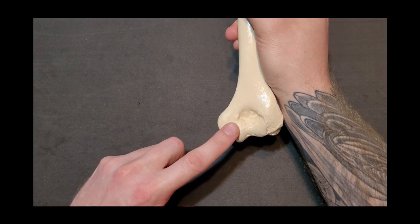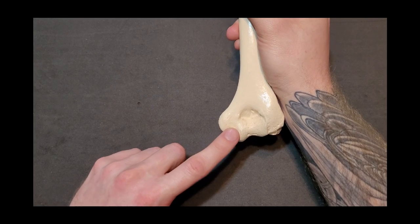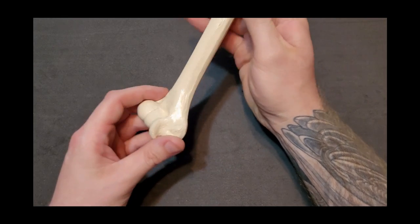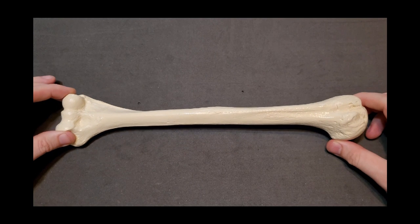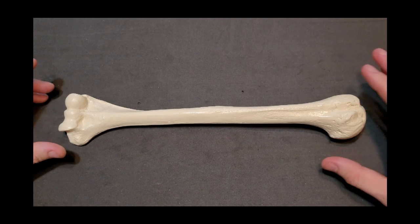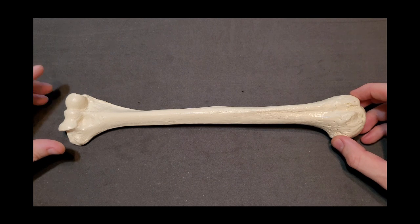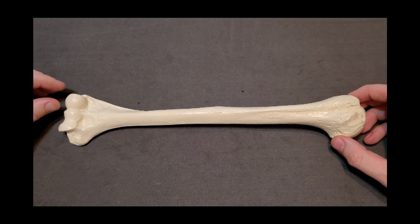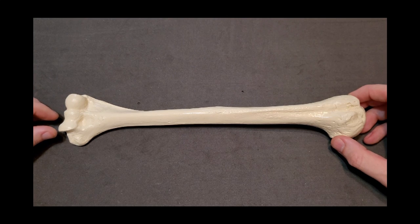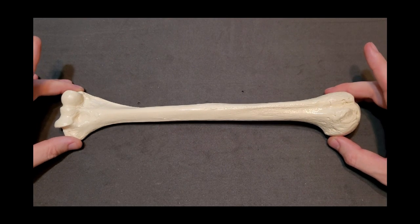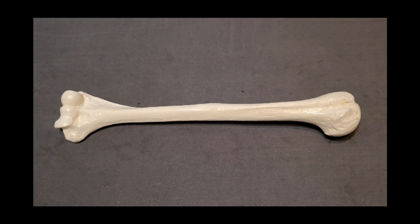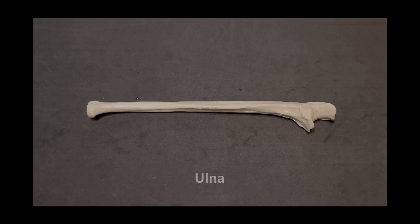Gently finding your own medial epicondyle, you can actually strum the ulnar nerve traveling through that groove. In summary, the proximal end has the head articulating with the scapula, and the distal end has the capitulum and trochlea articulating with the radius and ulna. That concludes all bony landmarks of the humerus.